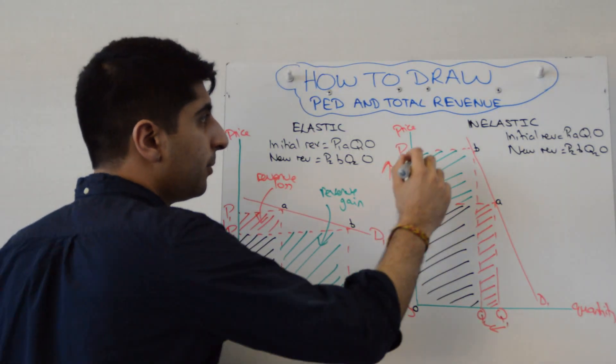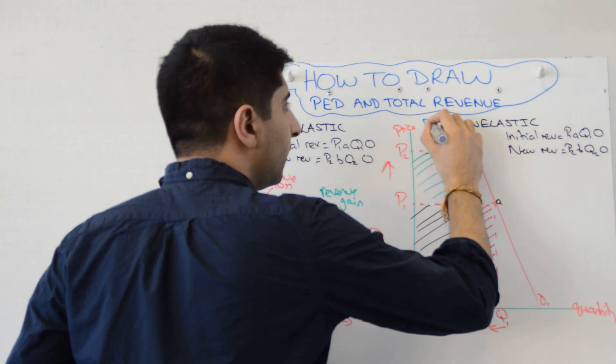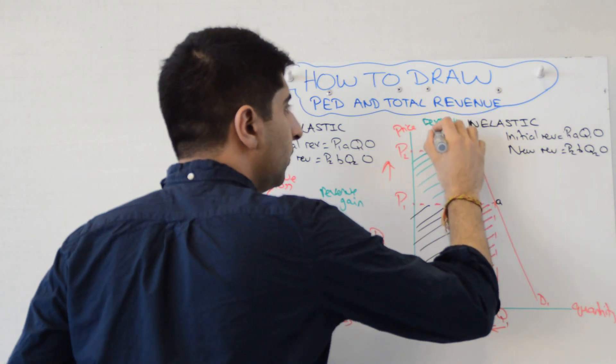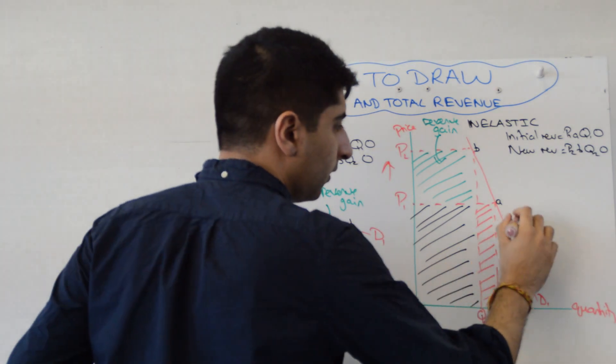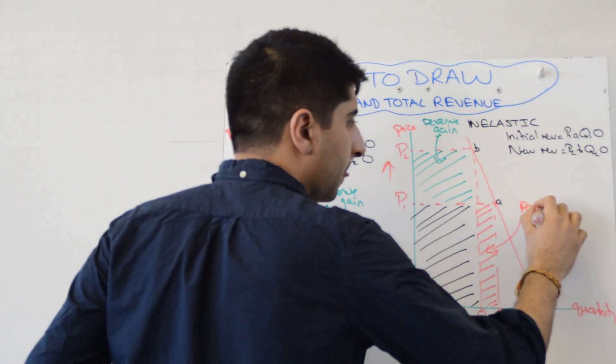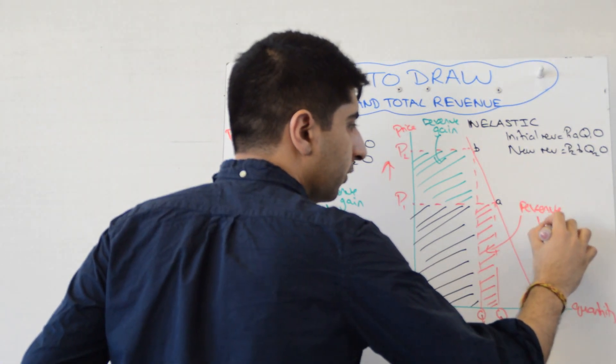And again, what we do is we label. So we can label that the revenue gain. And we can label this red box the revenue loss.